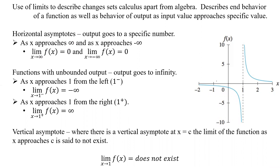Functions with unbounded outputs basically go to positive or negative infinity. The output goes to infinity — whether it's negative or positive depends on which way it goes.